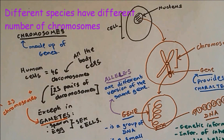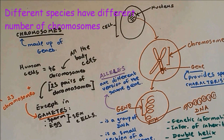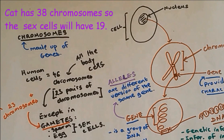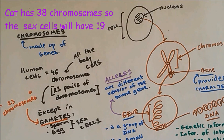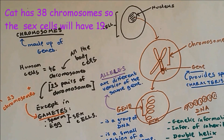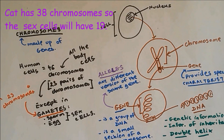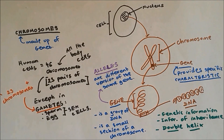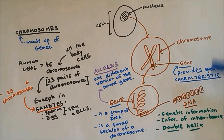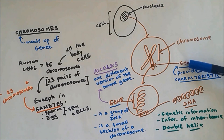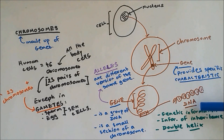Note that there are different numbers of chromosomes in different species. For example, a cat has 38 chromosomes in its normal body cells, so the gamete or sex cells will contain 19 chromosomes — you just divide by 2 to find the number of chromosomes in the gamete. To summarize: if you are looking under a microscope, the largest part will be the cell, then the nucleus, then the chromosome, then the gene, and the smallest part will be the DNA.